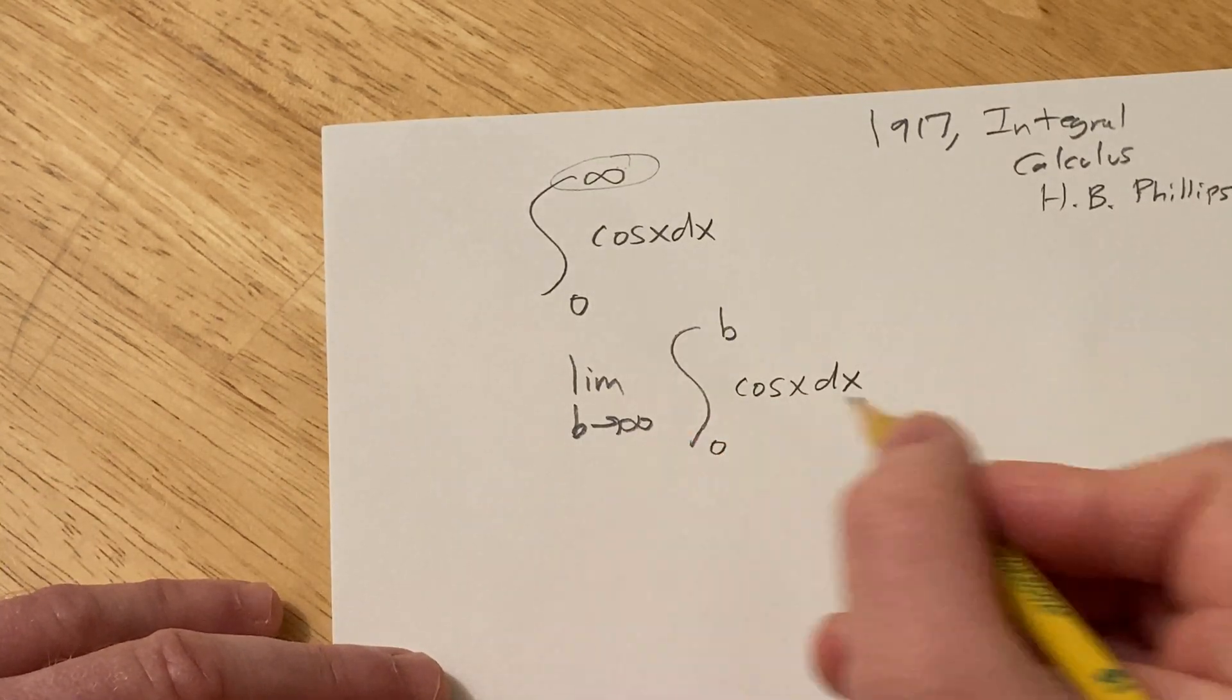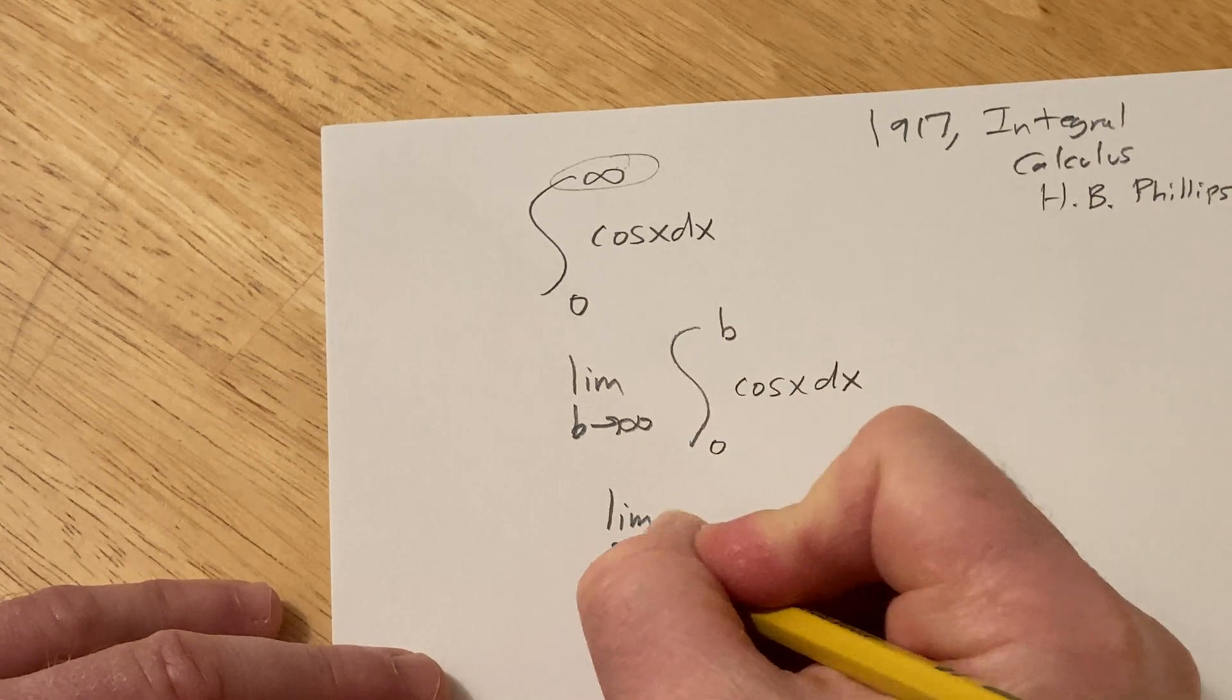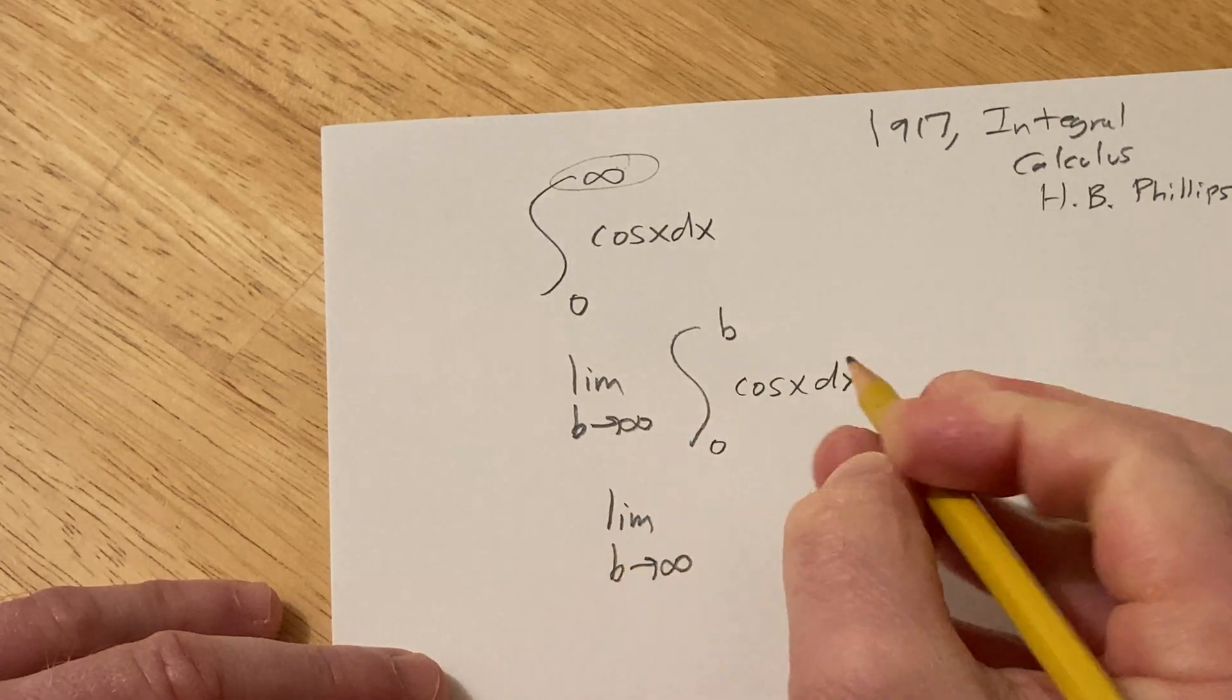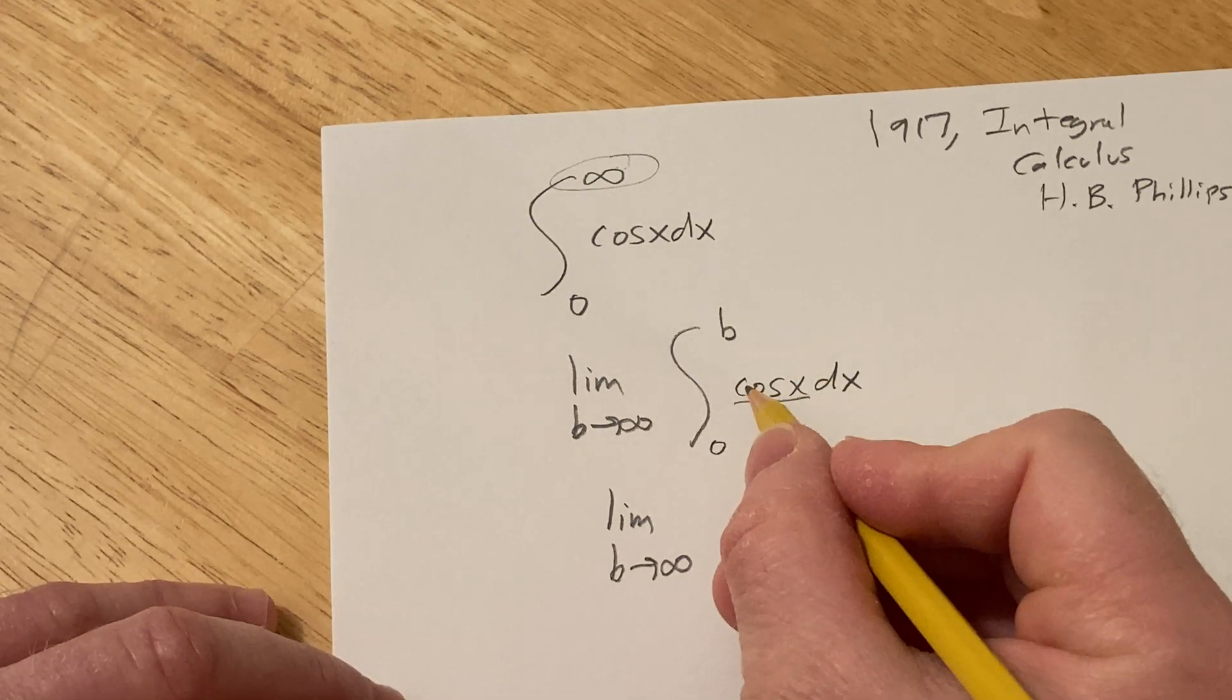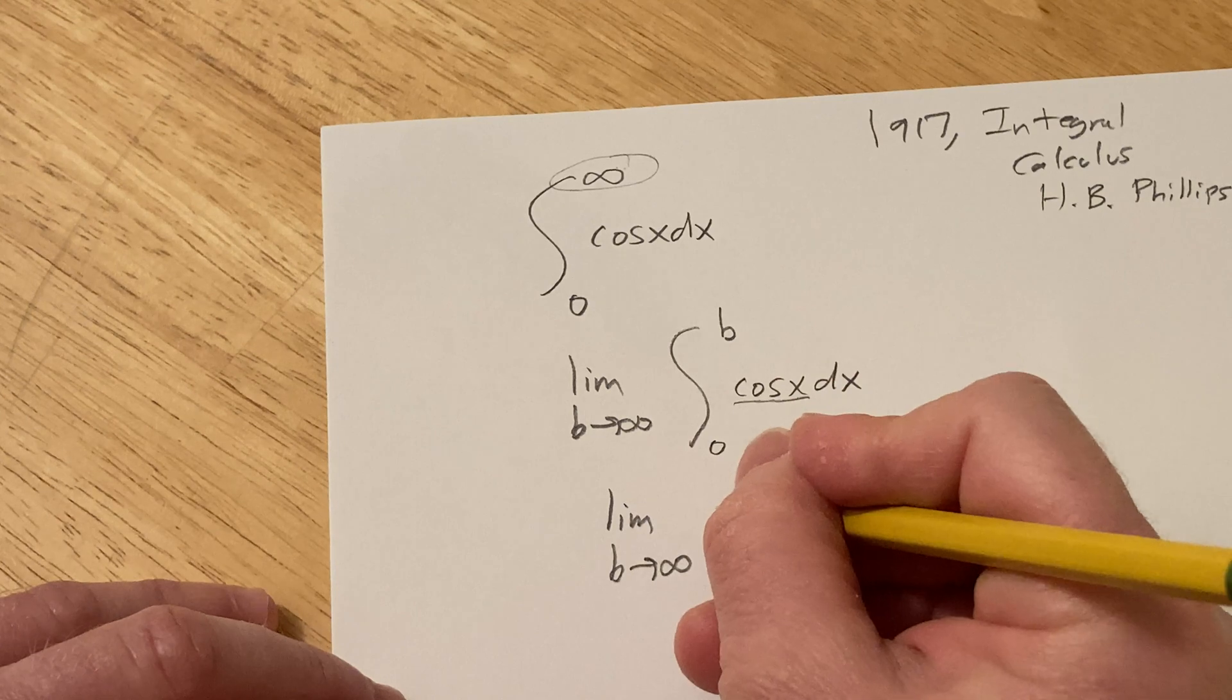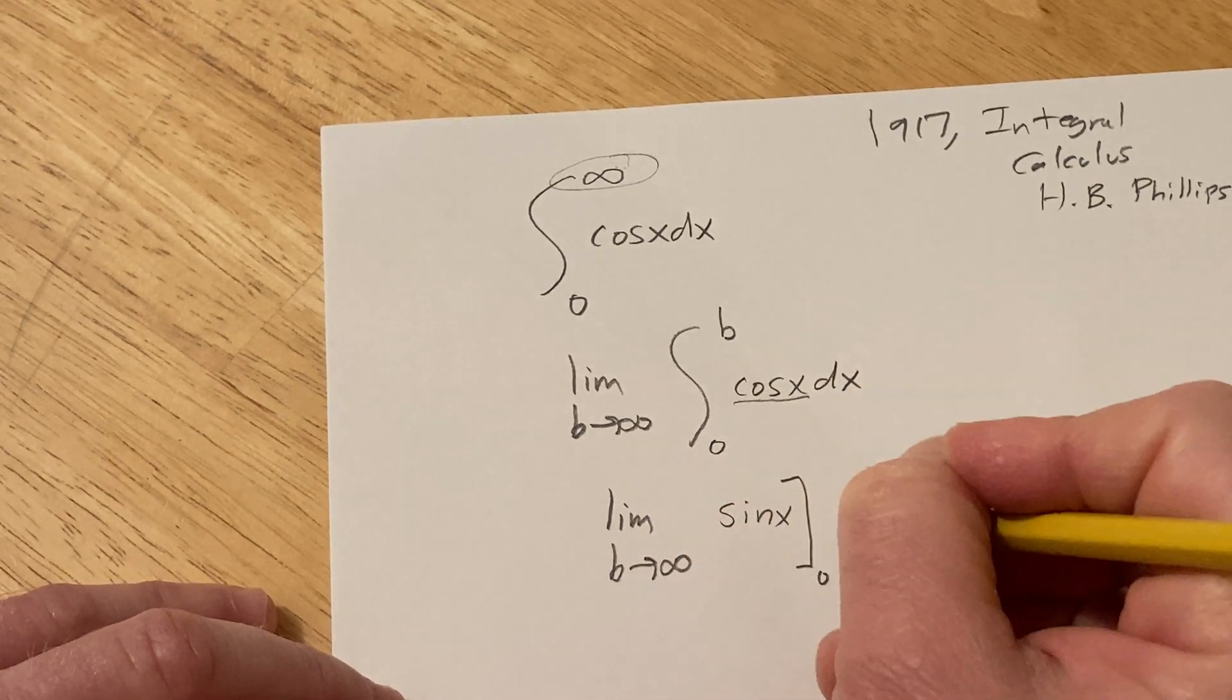Alright, and then so now what you do is you integrate this. So this is the limit as B approaches infinity. When you're integrating cosine, you ask yourself, what's a function whose derivative is going to give you cosine? Well, sine, and then we're going from zero to B.